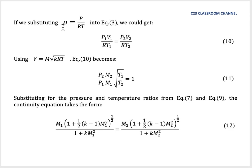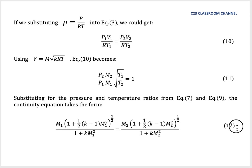Substituting ρ = P/(RT) into equation 3 gives P₁V₁/(RT₁) = P₂V₂/(RT₂). Then substituting velocity as Mach number times the speed of sound, equation 10 becomes the next form. Substituting the pressure and temperature ratios from equations 7 and 9, the continuity equation takes the form of equation 12.